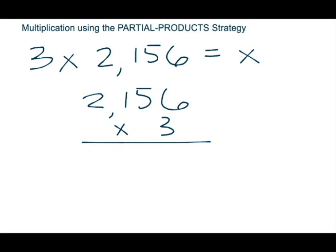I'm going to write that on the side in parentheses to help you keep track of what we're doing. The first product we're solving for is 2,000 times 3. 2,000 times 3 is 6,000.